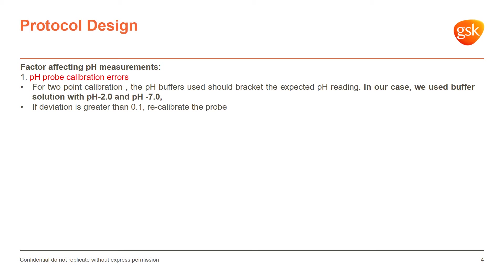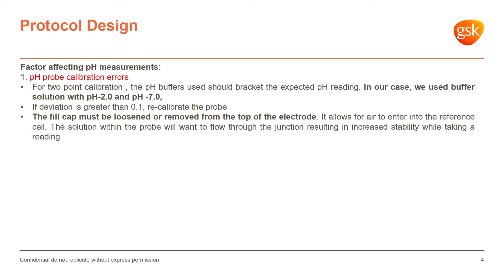We also had to understand the measurement variability, which is about 0.1 unit for the system. Any drift above 0.1 unit would trigger recalibration.